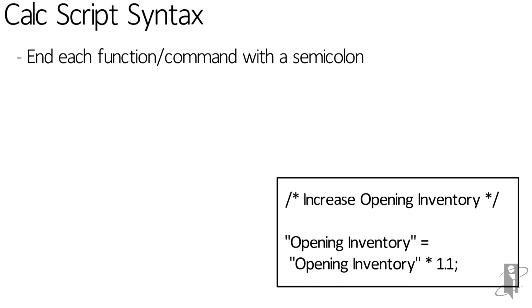So notice in my example over there, I have opening inventory equals, and then I did a carriage return, opening inventory times 1.1. Maybe I just want to make my opening inventory about 10% bigger. As soon as it gets to the semicolon, it says, oh, he's done with this line concept.